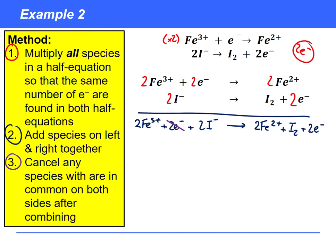So we lose the two electrons there and the two electrons there. It balances in terms of atoms and charges and this is our final redox equation.